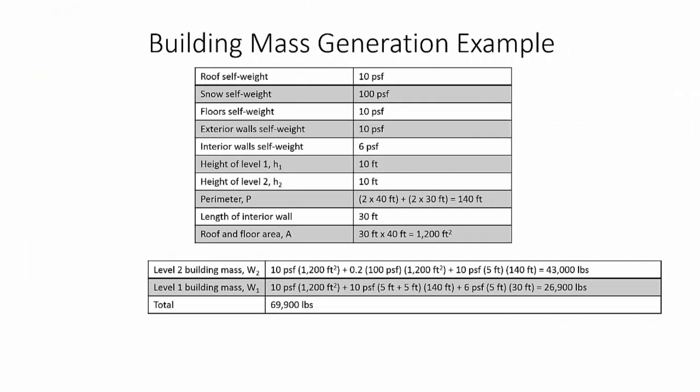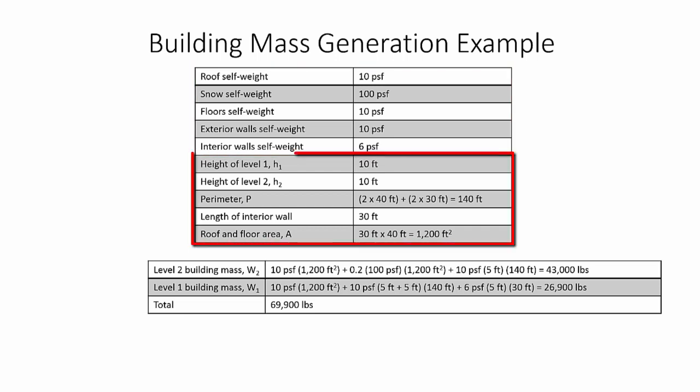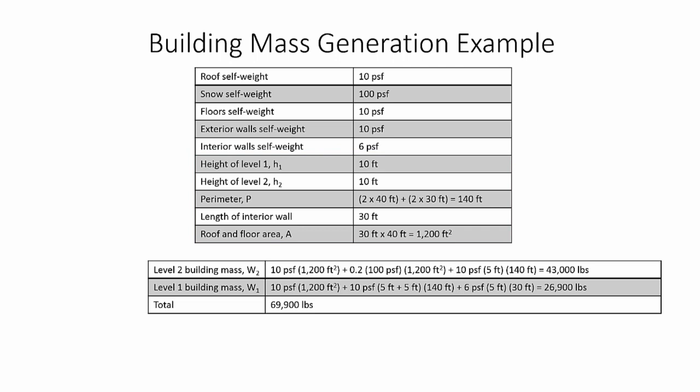This table shows the calculation to arrive at the same building mass as the program. First, it is important to note the self-weights used, the floor area, wall perimeter, and the length of the interior wall. To start, we will determine the mass of the second level attributed to the roof diaphragm. The roof self-weight is multiplied by the roof area.